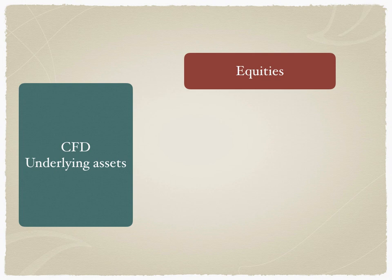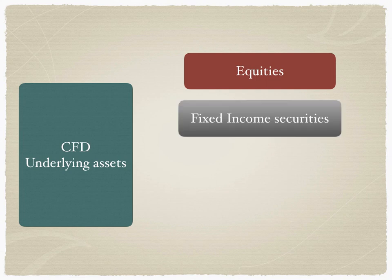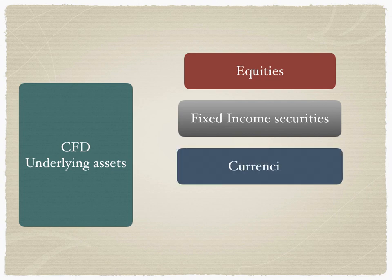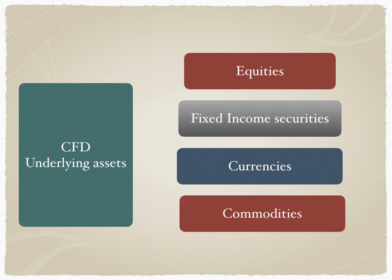The assets that CFDs could cover include equities across different markets, fixed income securities like corporate bonds and government bonds, currencies such as dollar, euro, and yen, and commodities. Commodities have been going through a severe cycle this year because of multiple geopolitical situations, and therefore hedge funds are able to use CFDs to leverage on trades and make maximized profits and returns for their investors.